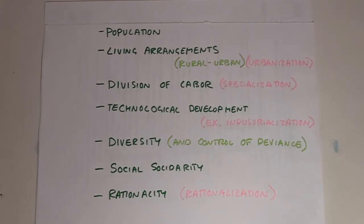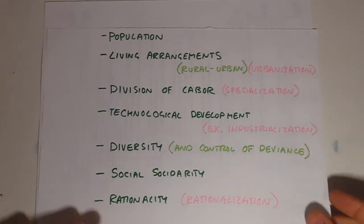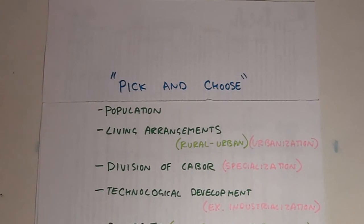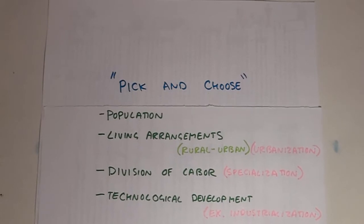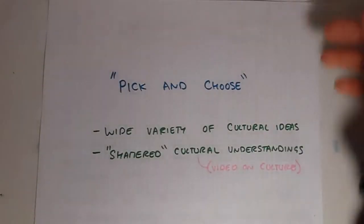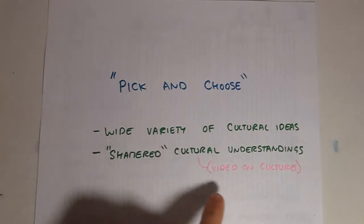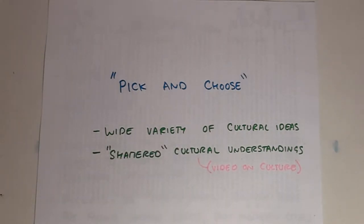If you've watched the other videos — the pre-modern and modern videos — you'll know that I use a phrase that epitomizes or typifies the attitude or worldview of people living in that kind of society. I don't have an equivalent phrase exactly for postmodern society, but the basic idea that I think describes it is the idea of picking and choosing. There's also a video on culture that will help you get a grasp on the idea of culture being shattered in a postmodern society.